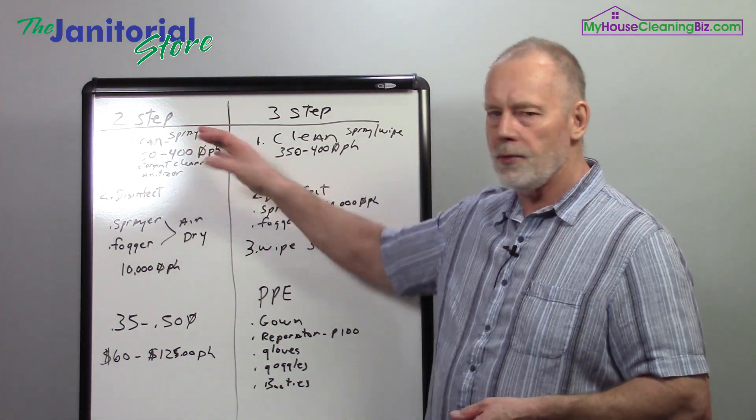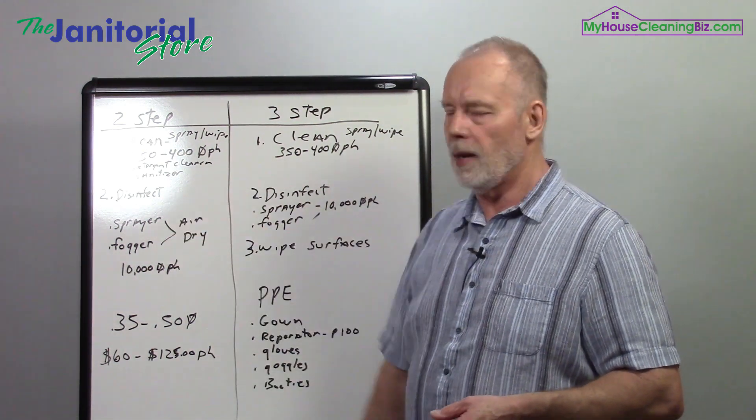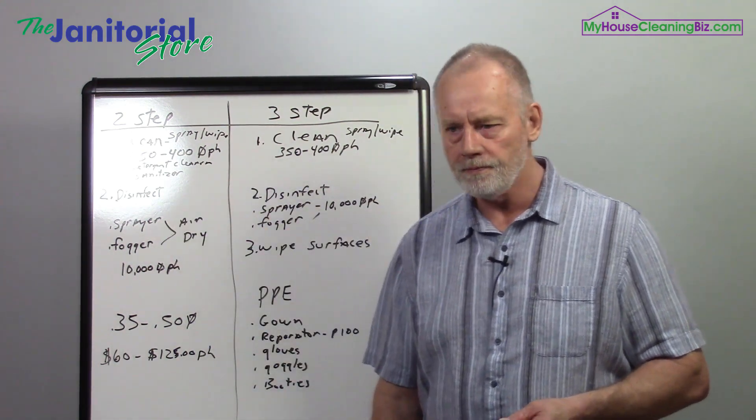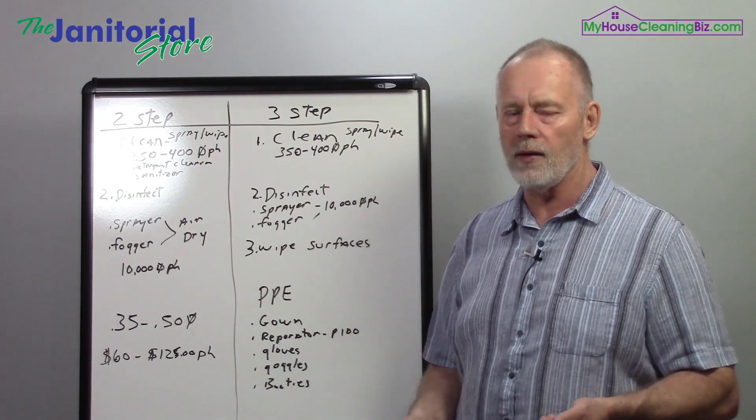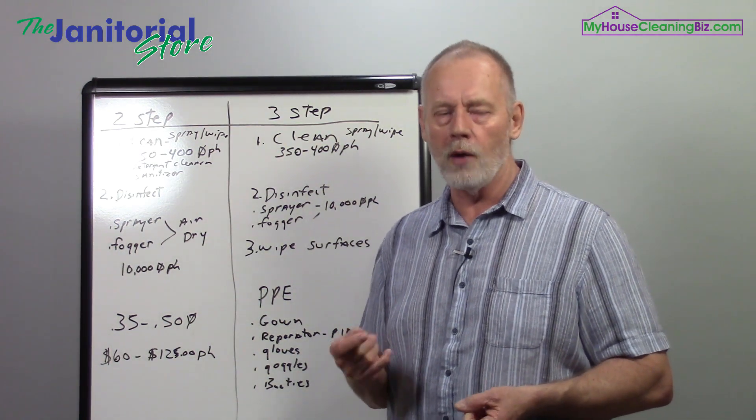Once a team member has gone through and done all the wiping down of surfaces, now another team member would come through and they disinfect. When they disinfect, they've got two different methods they can use: either electrostatic sprayer or a fogger.